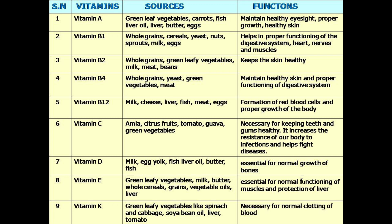Vitamin B2 sources are whole grain, green leafy vegetables, milk, meat, and beans. Its functions are to keep skin healthy and support proper functioning of the digestive system. Vitamin B3 sources are whole grain, yeast, green vegetables, and meat; its functions are to maintain healthy skin and proper functioning of the digestive system. Vitamin B12 sources are milk, cheese, liver, fish, meat, and eggs; its functions are formation of red blood cells and proper growth of the body.